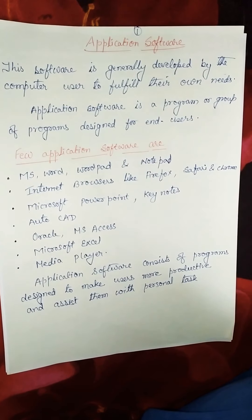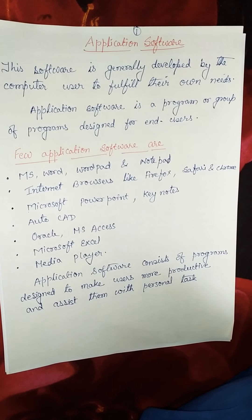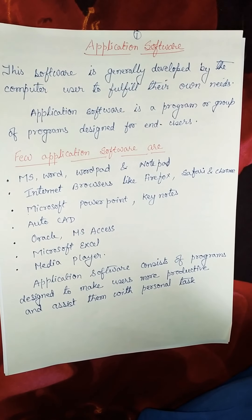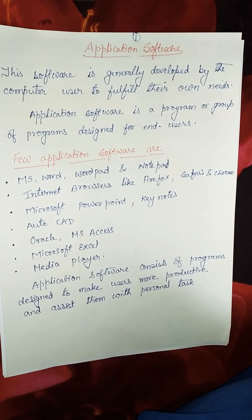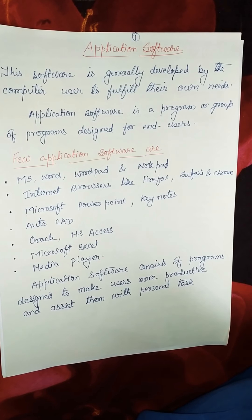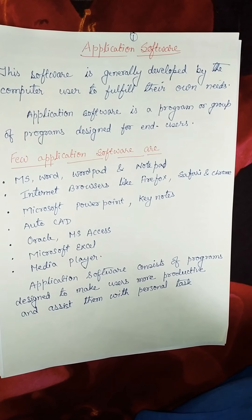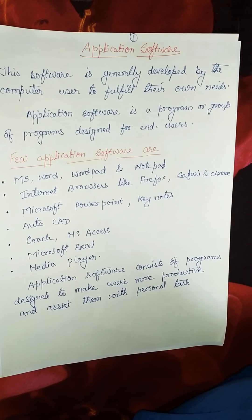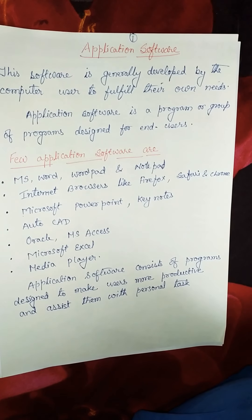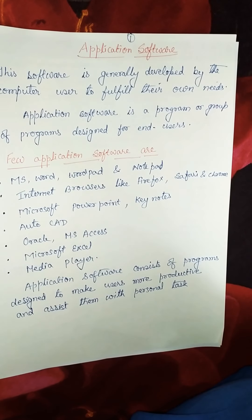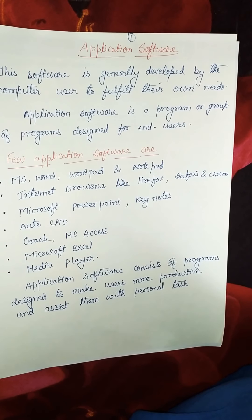Software is categorized into four types. First one is operating system, second one is application system, third is utility system, and fourth one is language processor. I have also told you about operating system. Let's have a recap of operating system.